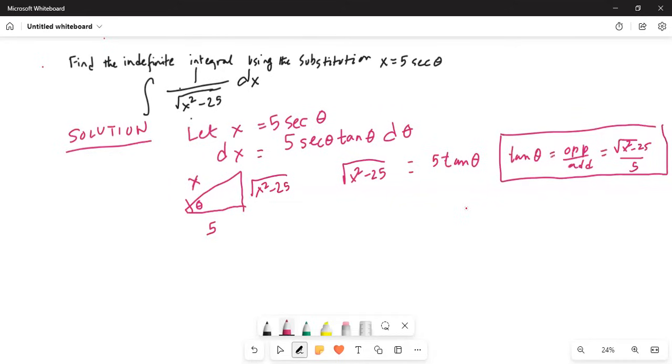Now let's do the integration. So we have been asked to integrate 1 divided by square root of x squared minus 25 dx, which can be written as 5 tangent of theta. We can write 5 tangent of theta. And for dx, we can write 5 secant theta tangent of theta d theta.